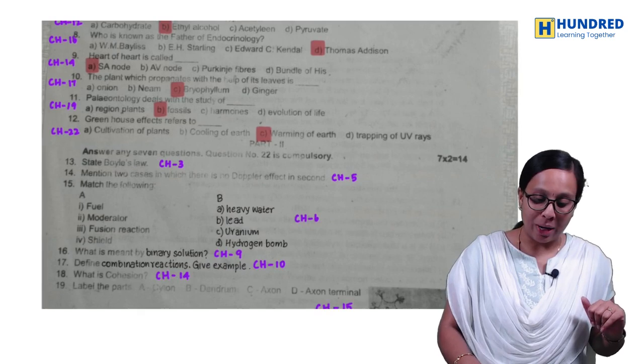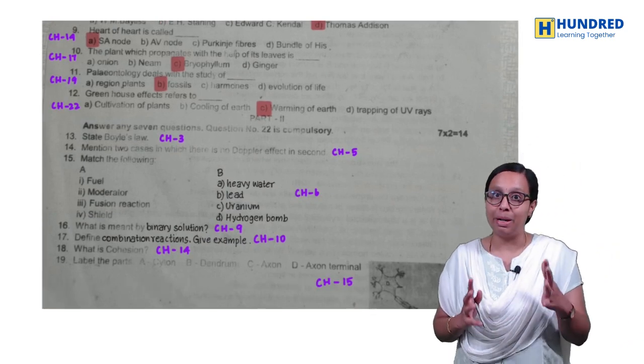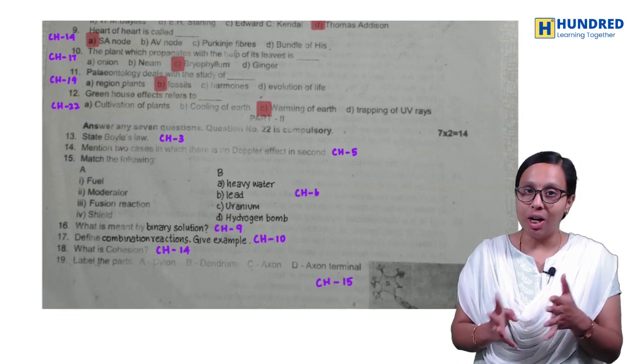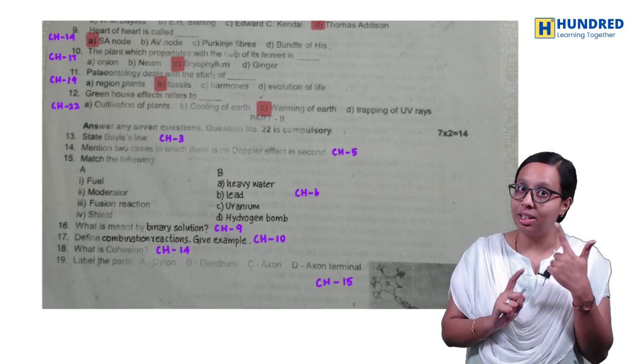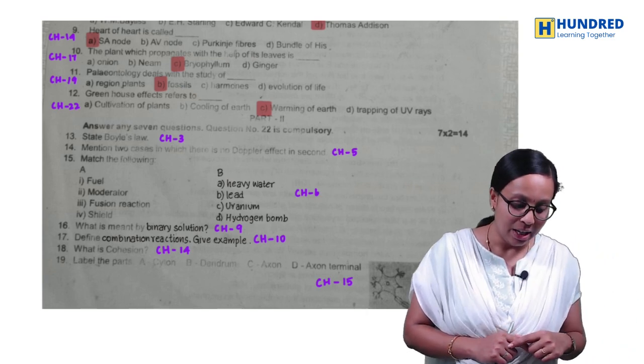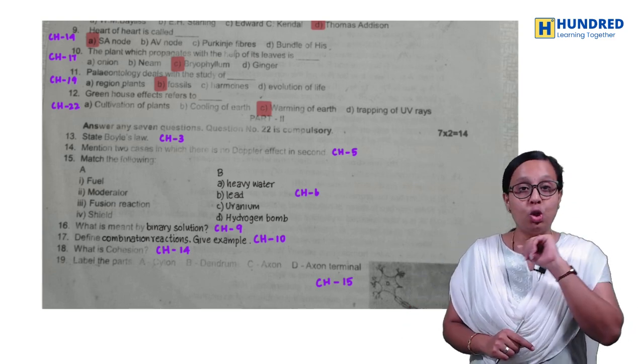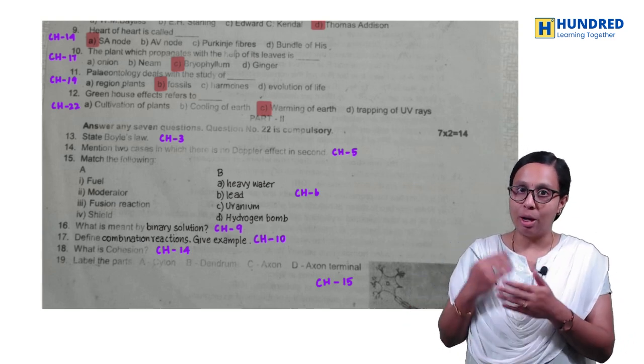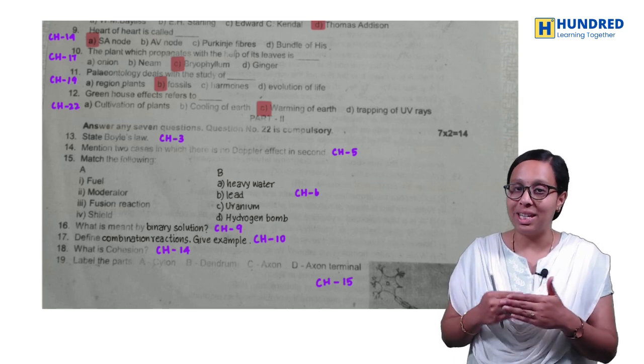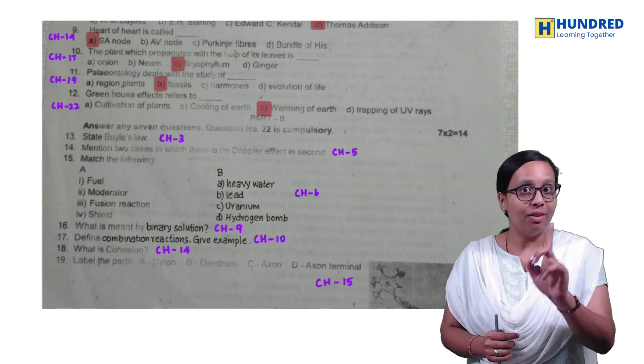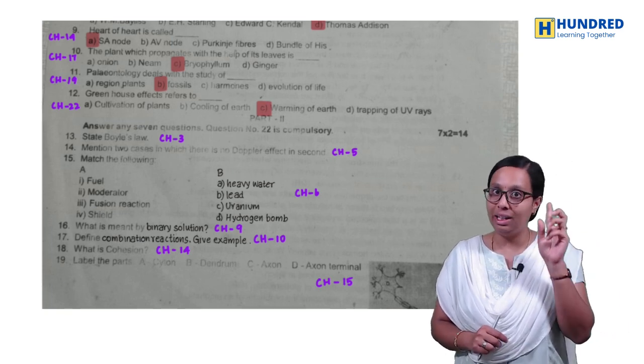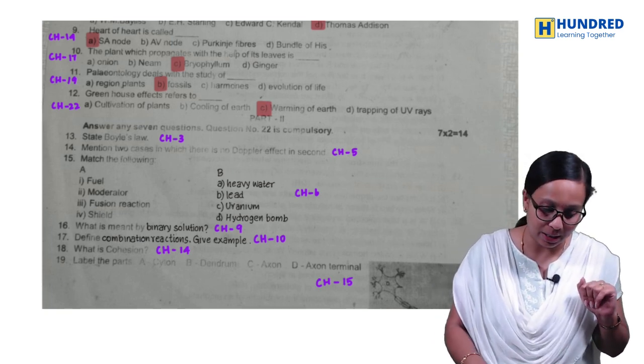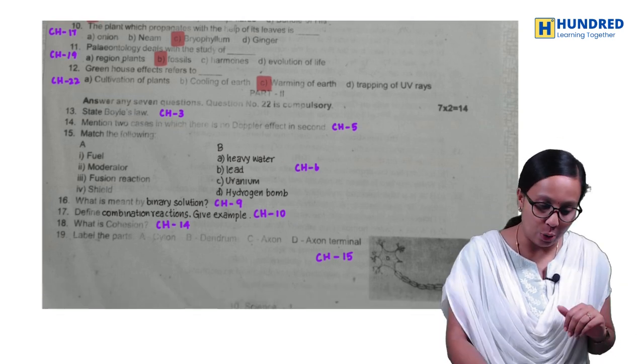So now, we have questions. We can choose the question paper. So state Boyle's law. So two districts analyze, both Boyle's law are in two districts. So that is a very important question. And then, mentioned two cases in which no Doppler effect is taking place. So we have discussed the question paper in this case. In this case, you can choose the repeat question. And then, nuclear physics match the following. So in two districts, this is repeated.